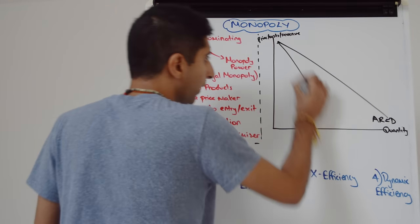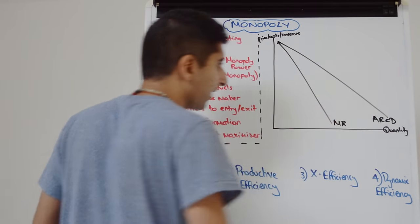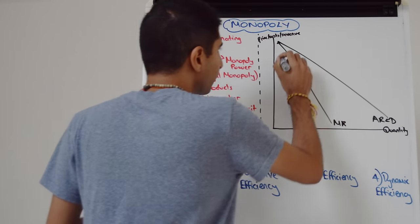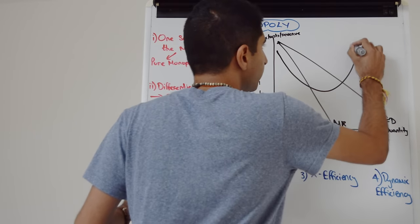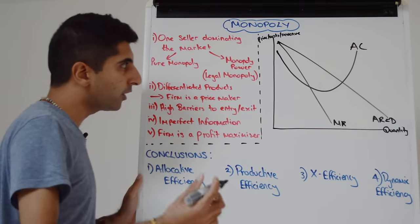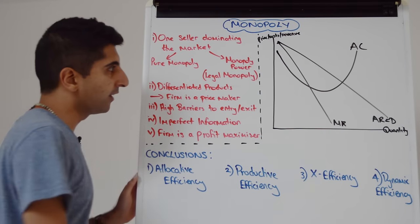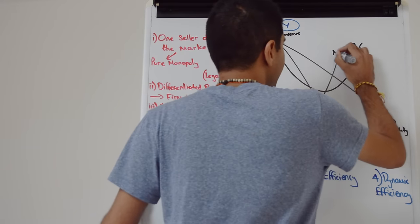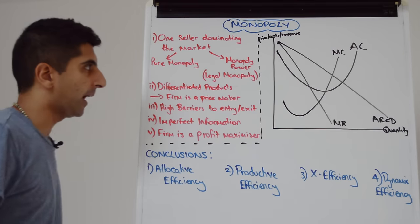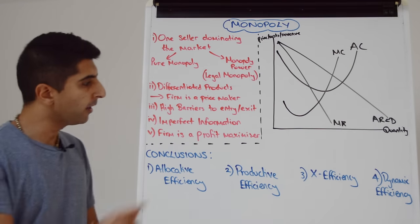Marginal revenue is going to be twice as steep, looking something like that. Average cost, remember, is our little smiley face. So average cost is going to look something like that. And marginal cost cuts average cost at its lowest point. Looks like a Nike tick, so we can get marginal cost on like that. Brilliant, that's the basis of our diagram.